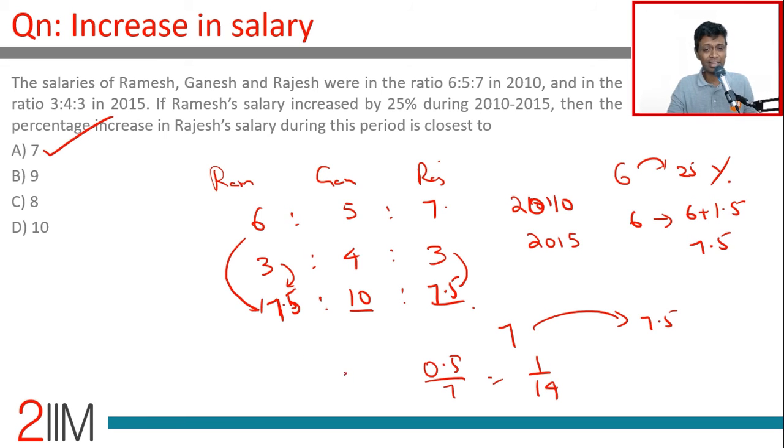The key thing here is to be able to translate ratios. 3:4:3 is 7.5:10:7.5, keeping this as the base, finding this number and then translating this ratio with this number as static. A very simple question but delightful question to understand ratios.